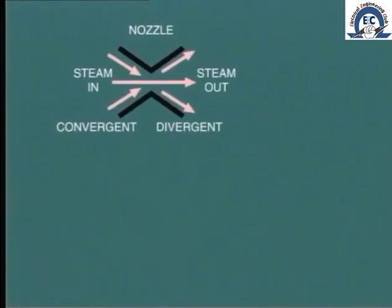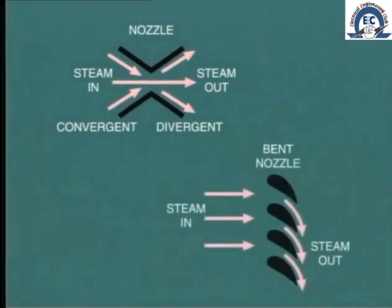Each pair of stationary blades is shaped to form a convergent-divergent nozzle. However, the form of the nozzle is bent to receive the steam exiting from the previous moving stage and then to turn and redirect the steam onto the next moving stage.